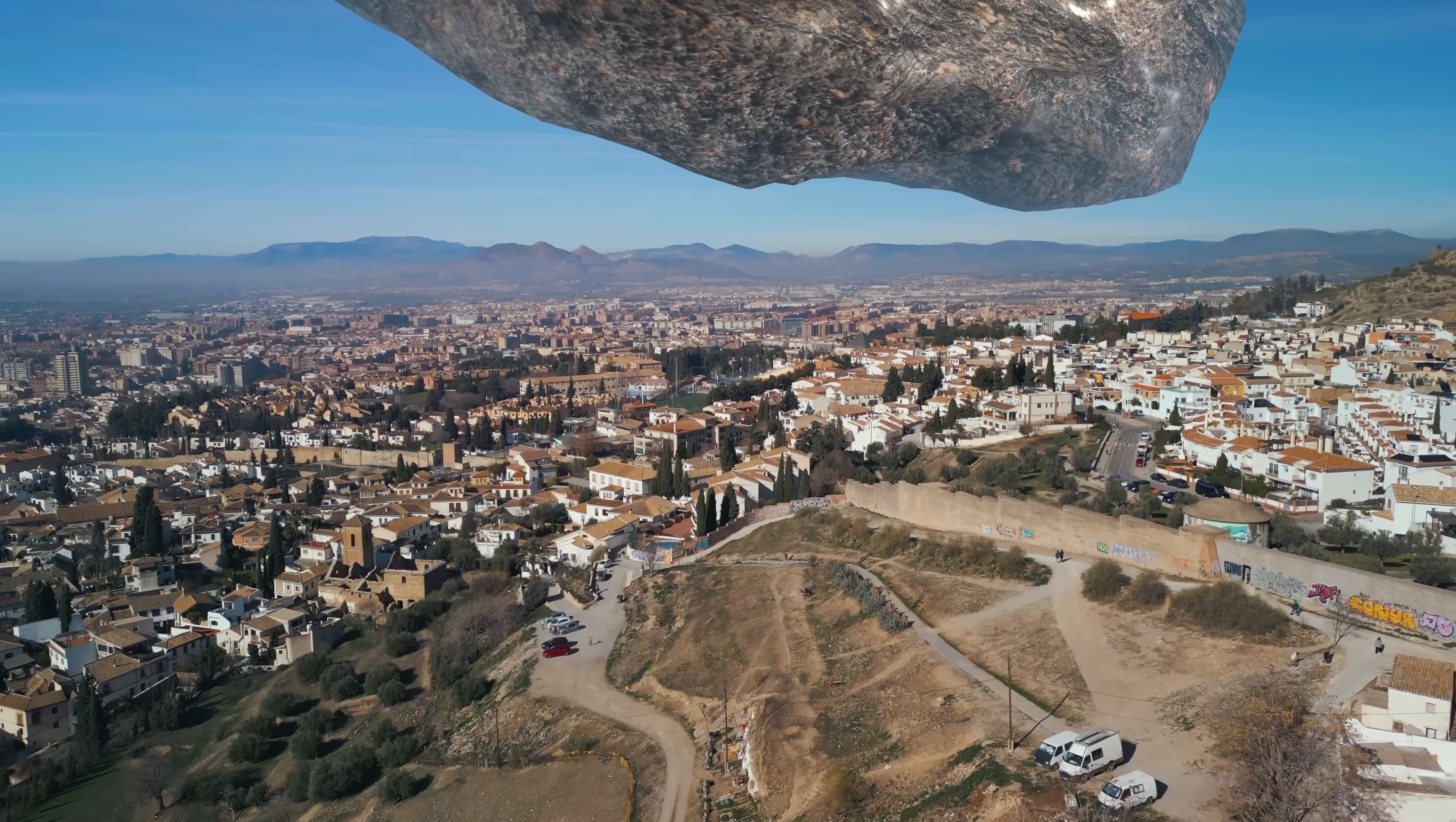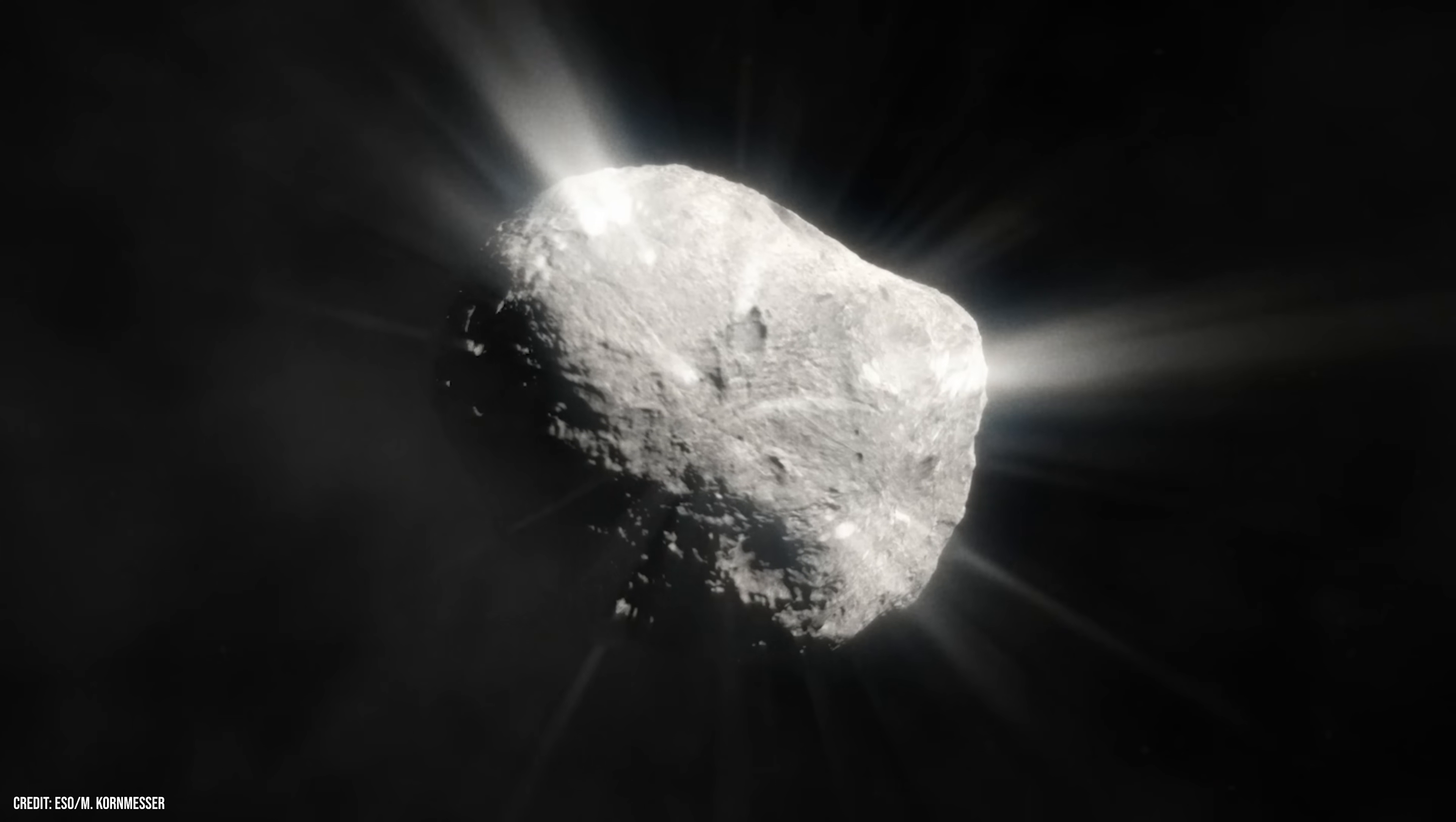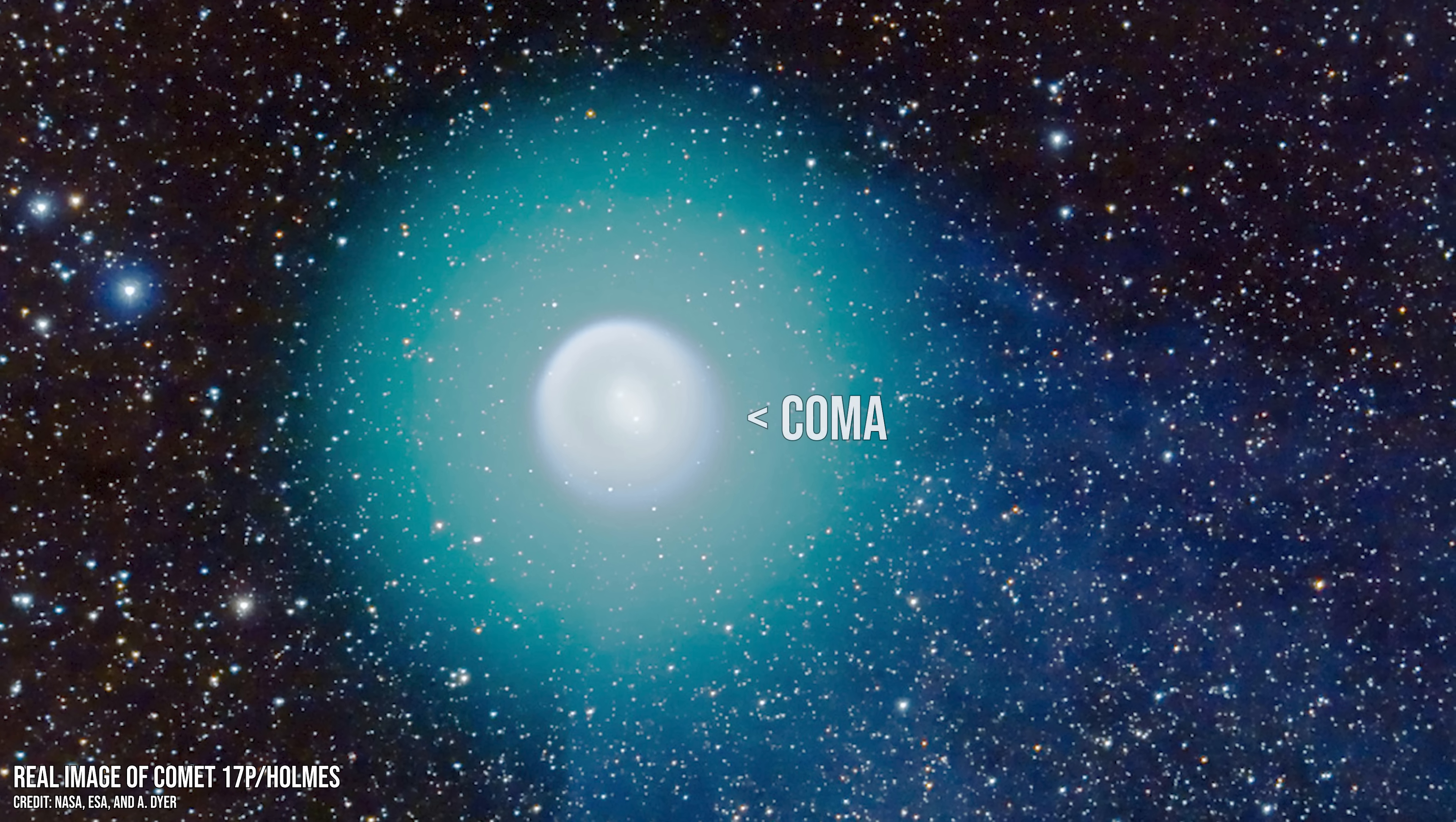When frozen, comets can be the size of a town, but occasionally a comet's orbit can bring it close to the sun, heating it up, causing dust and gases to spew into space, creating an enormous glowing atmosphere, sometimes larger than a planet. This magnificent celestial feature is called the coma.